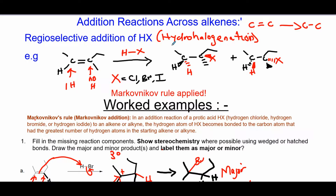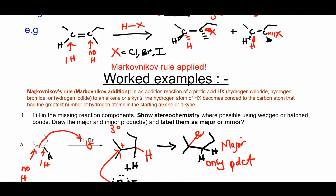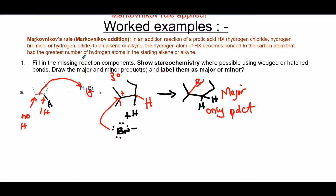It's hydrohalogenation because you're adding a hydrogen and a halogen at the same time, following Markovnikov's rule. Markovnikov's rule states that in an addition reaction of a protic acid like HX to an alkene or alkyne, the hydrogen atom of the acid becomes bonded to the carbon atom that has the greatest number of hydrogen atoms in the starting alkene or alkyne.